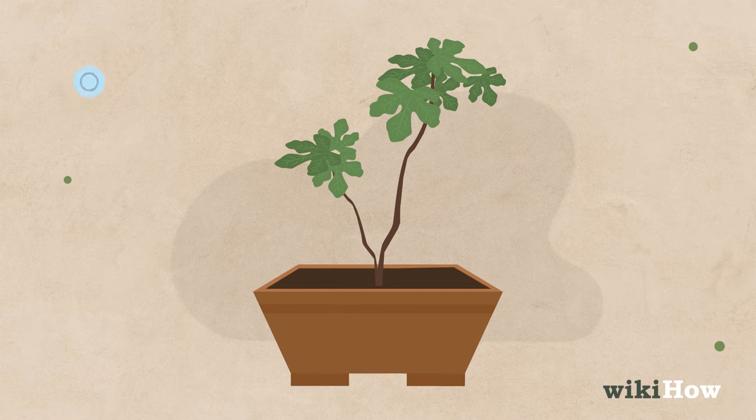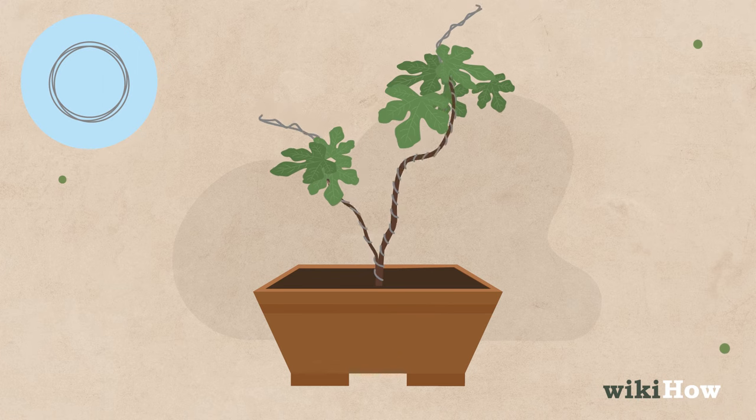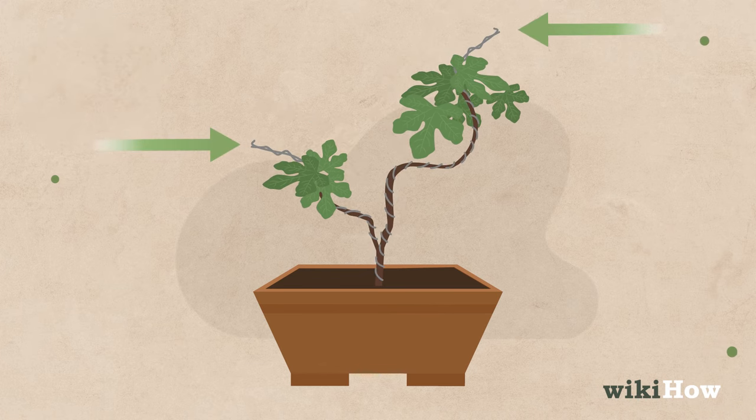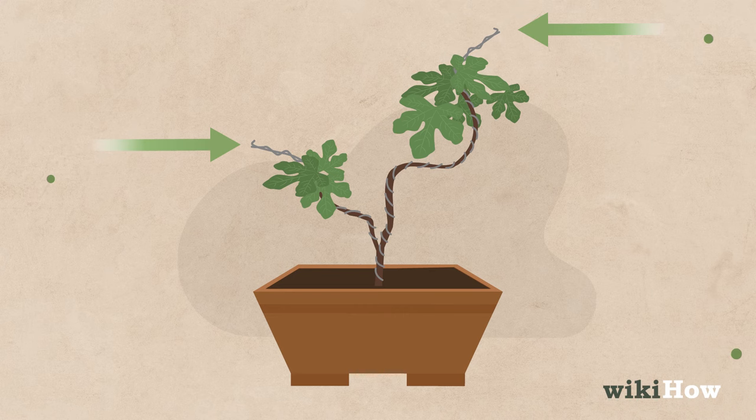To shape your bonsai tree, wrap wire around the branches in loose coils and extend the coils past the end of each branch in the direction you want it to grow.